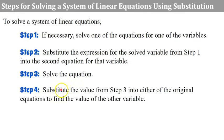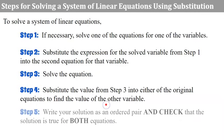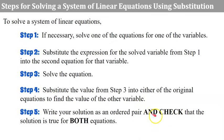Step four, substitute the value that you solve for in step three into either of the original equations to find the value of the other variable. Step five, write your solution as an ordered pair. And most of all, we're going to check that this solution is true for both equations.